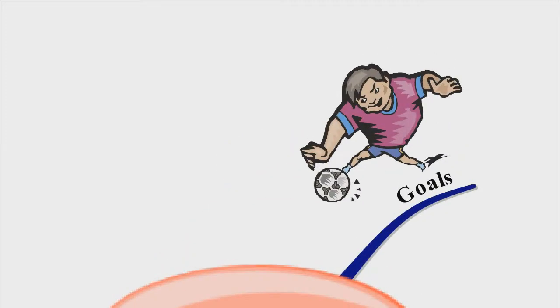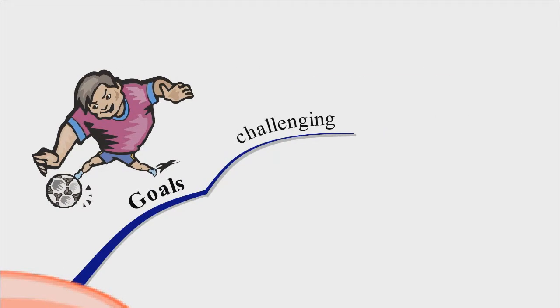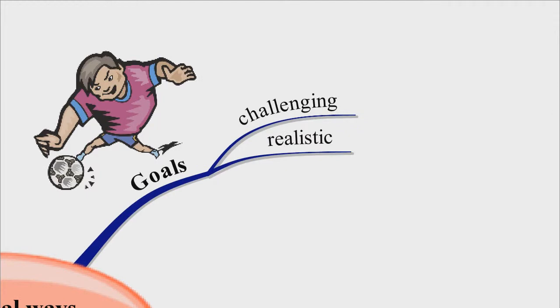Number one: goals. Achievement oriented people set goals which are challenging. If goals are very easy, you lose motivation, and if they are impossible, you lose motivation. These people set goals which are realistic. This may be different for different people. What is realistic for one may not be realistic for another.